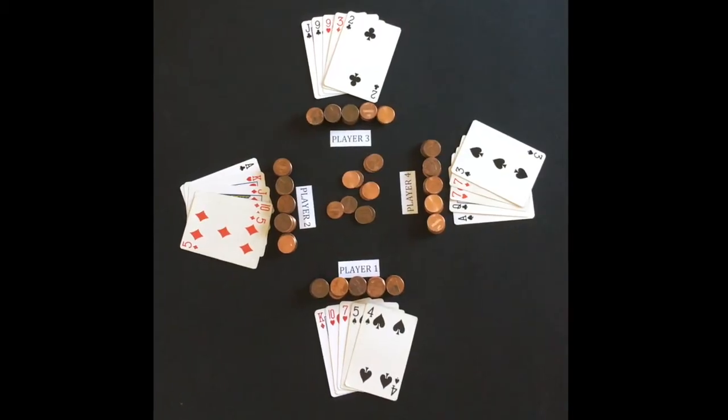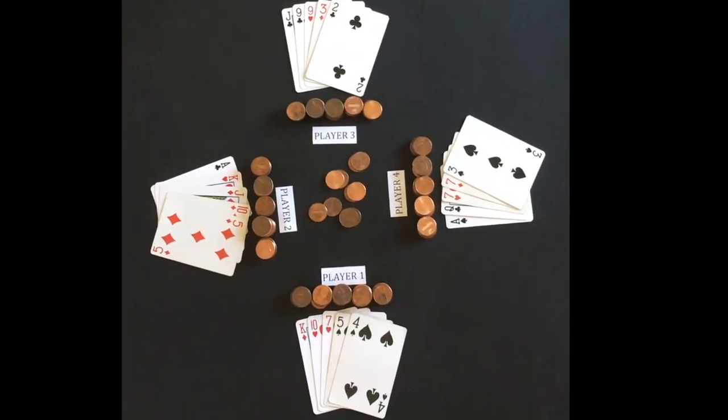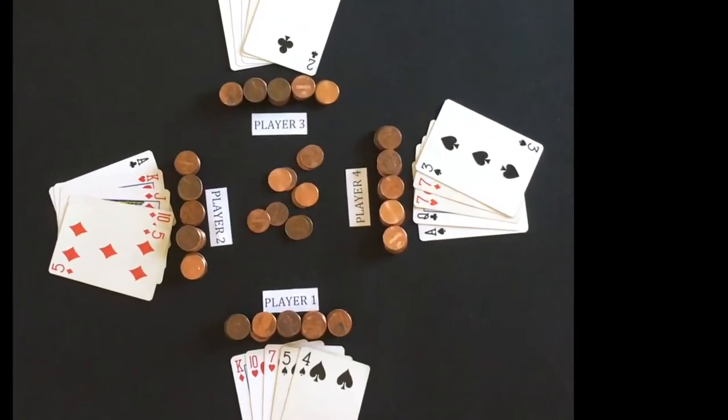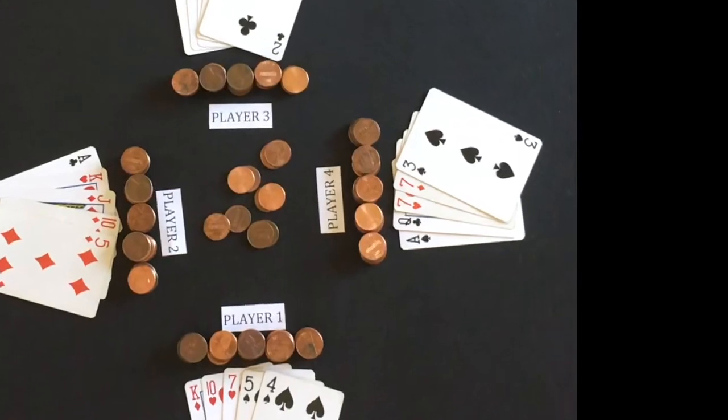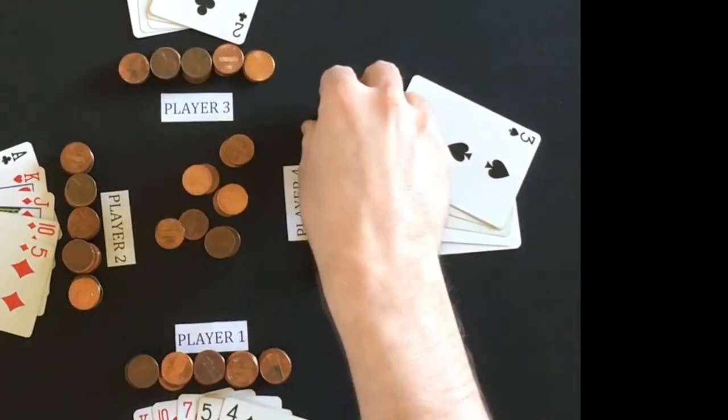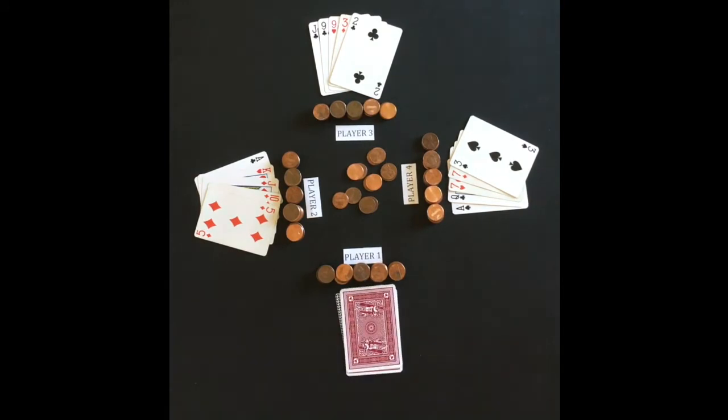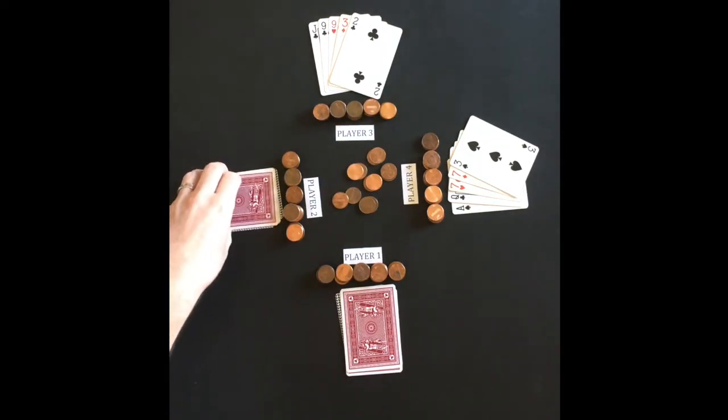Player 4 has to at least bet 2 pennies to stay in the poker hand. Otherwise, he has to fold. Player 4 could bet more than 2 pennies to raise the bet. But player 4 decides to match the 2 pennies bet. Player 1 does not want to bet and folds his cards. The bet returns to player 2 since he checked the first time around. Player 2 must now bet 2 or more to stay in the poker hand. Player 2 decides to fold.